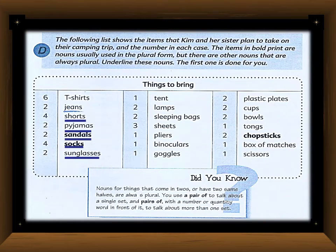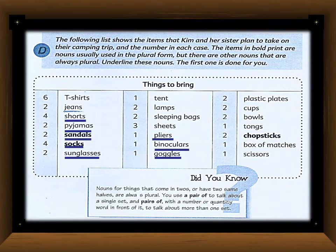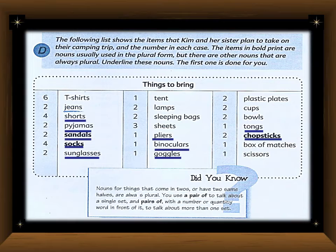Then 'pliers' — this is a tool with two parts, so it is always plural. Then 'binoculars' and 'goggles.' Among items like plastic plates, cups, balls, 'tongs' qualifies because it has two parts. 'Chopsticks' — the same case. And 'scissors' — because it has two parts — is also always plural. 'Box of matches' does not qualify.